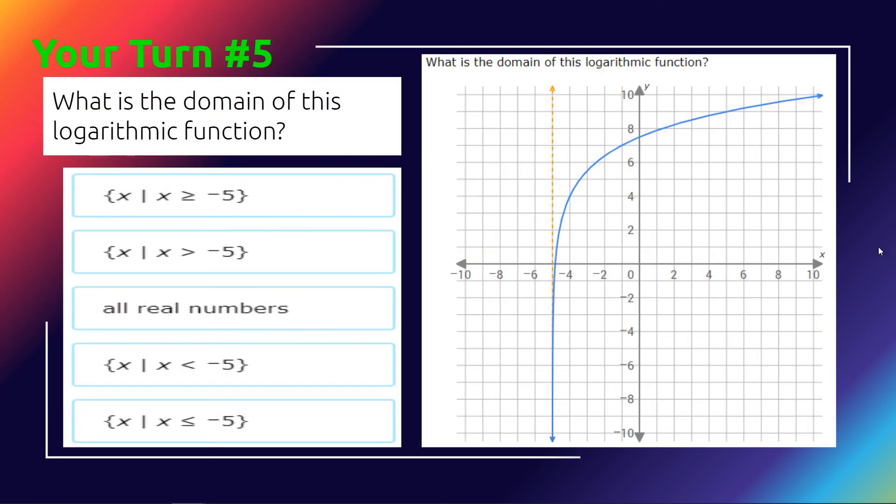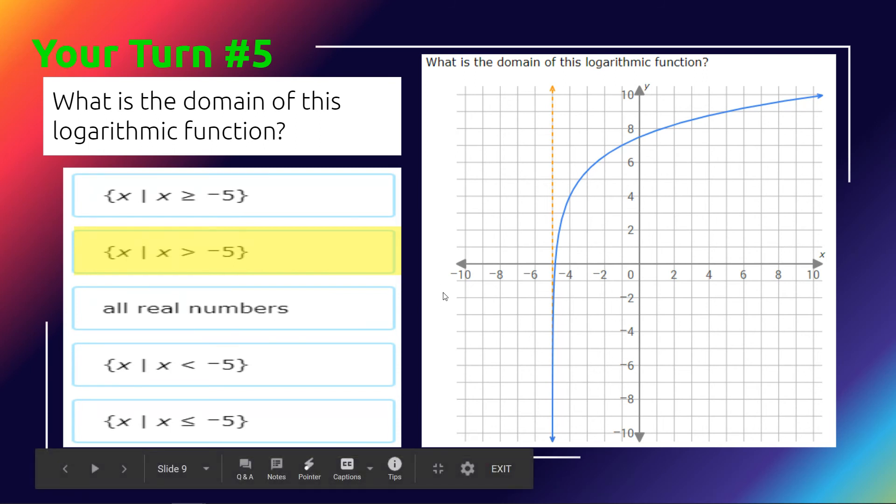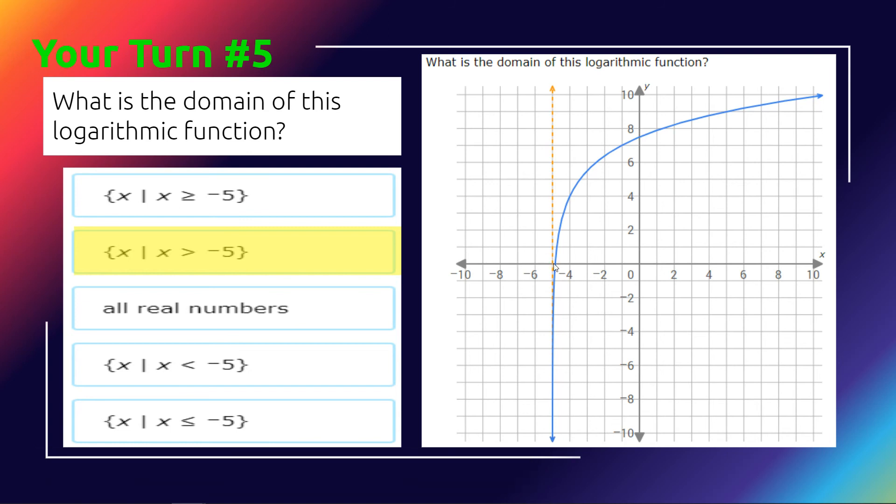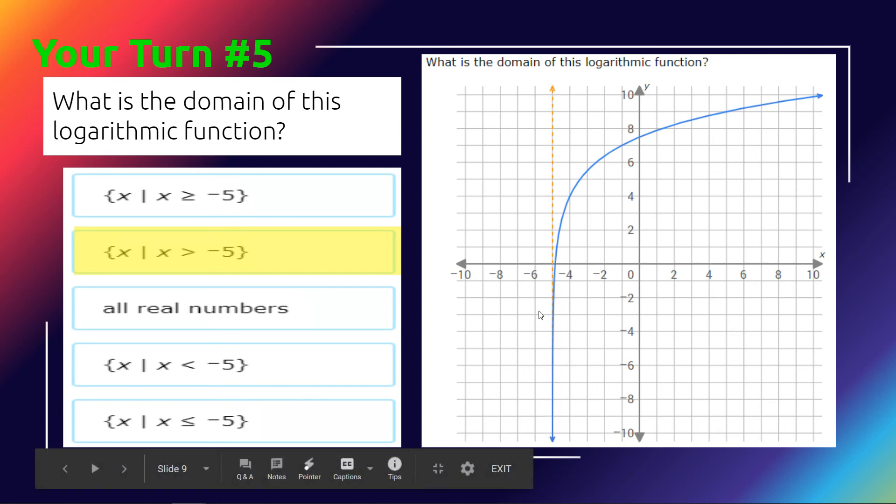What is the domain of this logarithmic function? If you chose that x is everything bigger than negative 5, you'd be correct. Remember, when we're looking for domain, we go from left to right and come to where we see our first point where we can actually touch the function. In this case, we're coming to the asymptote that is formed by the wall that this function cannot cross. That's how we get our domain here.